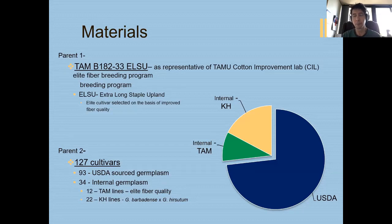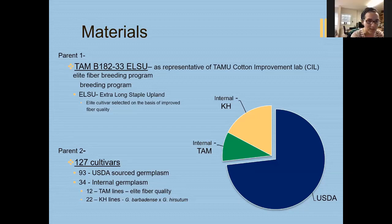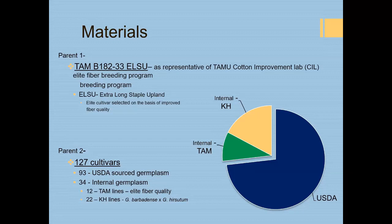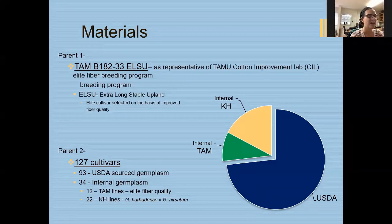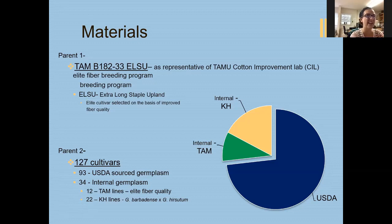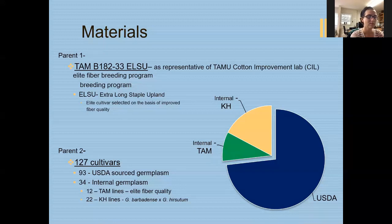Question: Are you taking these to yield, or are you just looking at fiber alone? These were just fiber alone. Yield itself is difficult considering that we don't have very much of them, and it's not a good representation of what you'd be looking at for yield, considering that in cotton yield is generally a very late generation selected trait. So looking at the yield of an F2 or an F1 isn't necessarily useful.